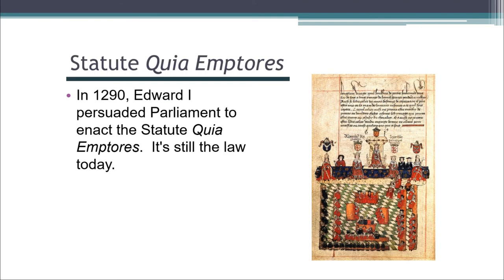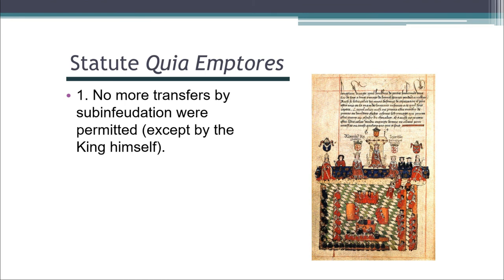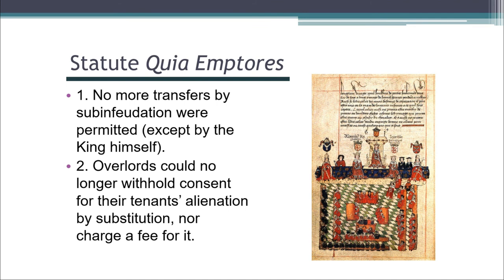Finally, in the year 1290, King Edward I persuaded Parliament to put a stop to this practice by enacting the statute Quia Emptores, which in most American states is theoretically still the law today. The statute provided that no longer would any transfers by sub-infeudation be allowed except by the king himself — no other tenants could add layers to the feudal system. At the same time, the statute provided that overlords could no longer charge a fee or fine or withhold their consent if their tenants wanted to make a transfer by substitution, so substitution became the only form of transfer available.